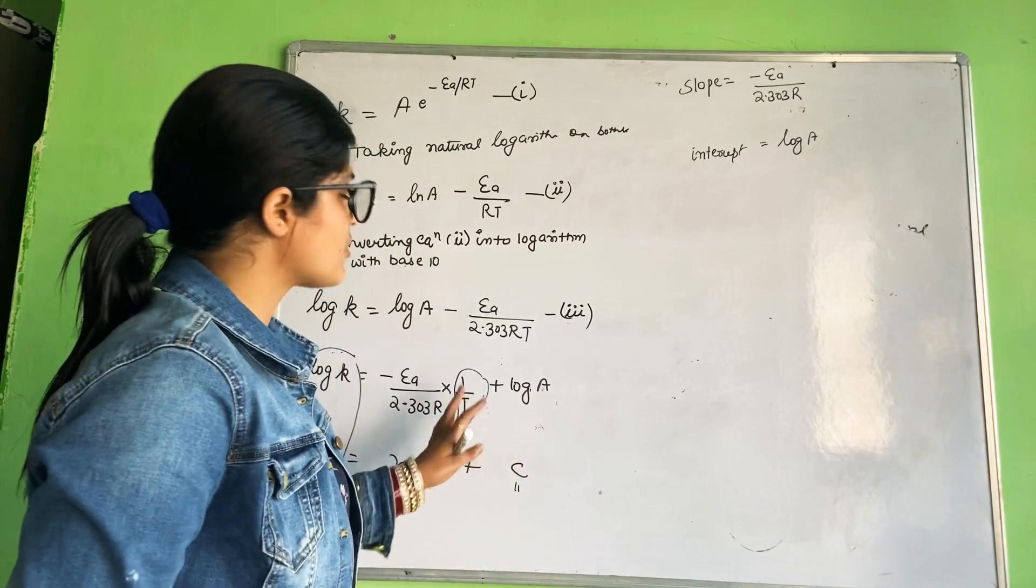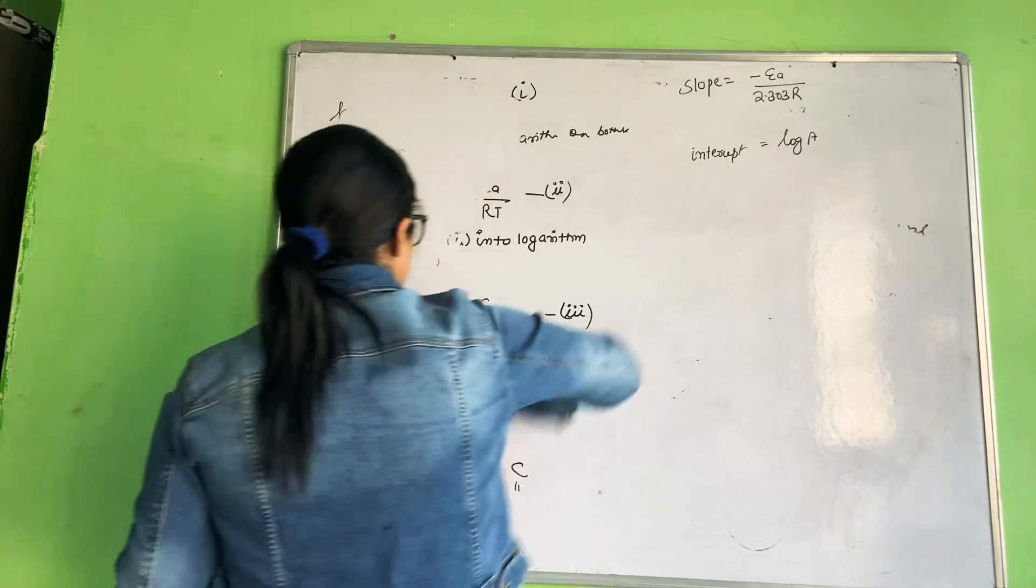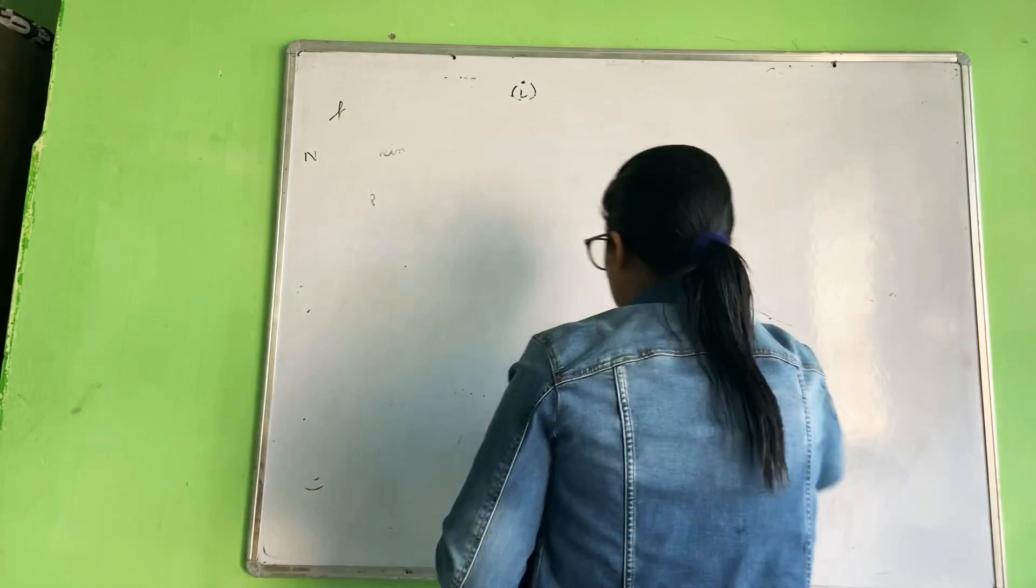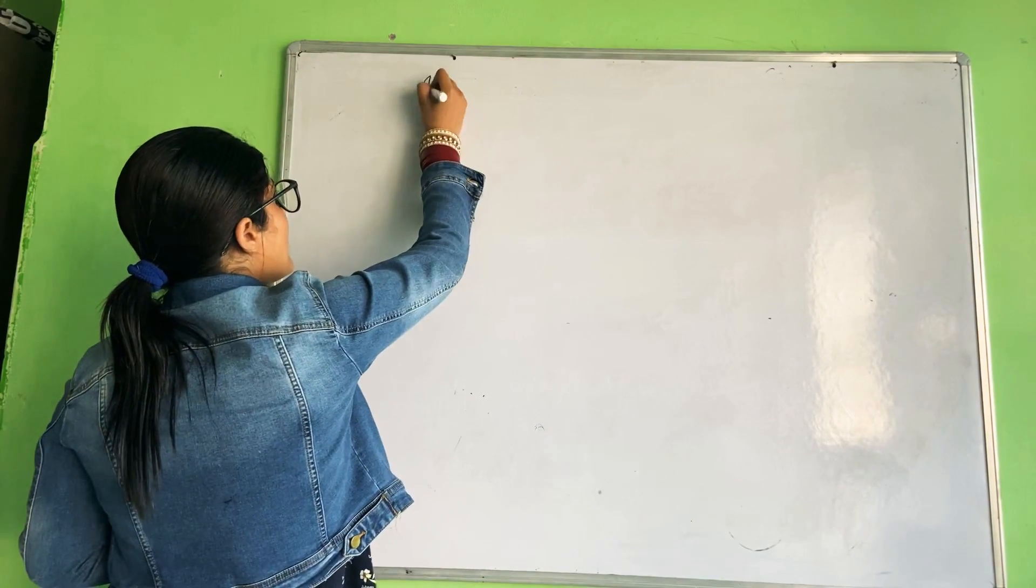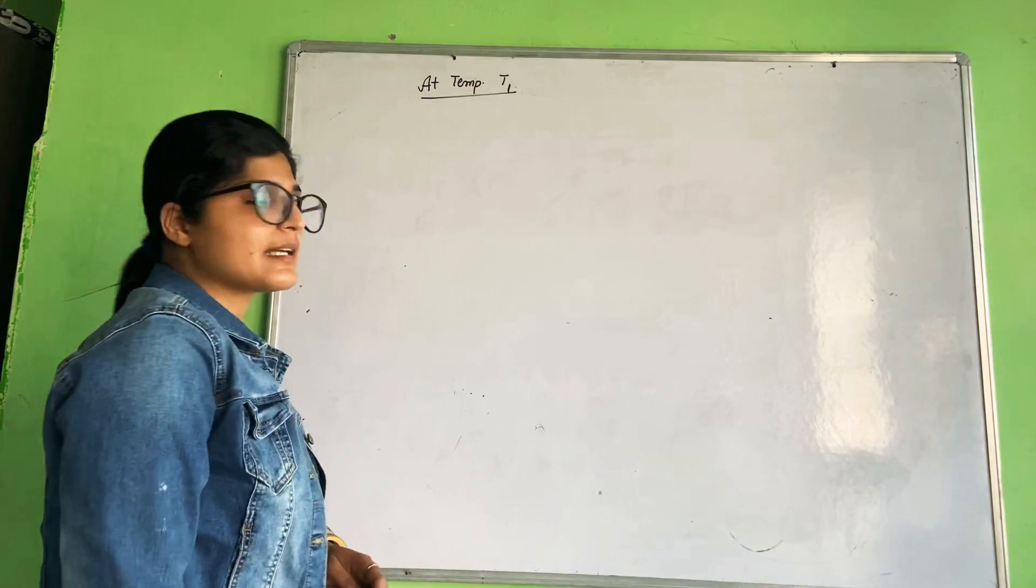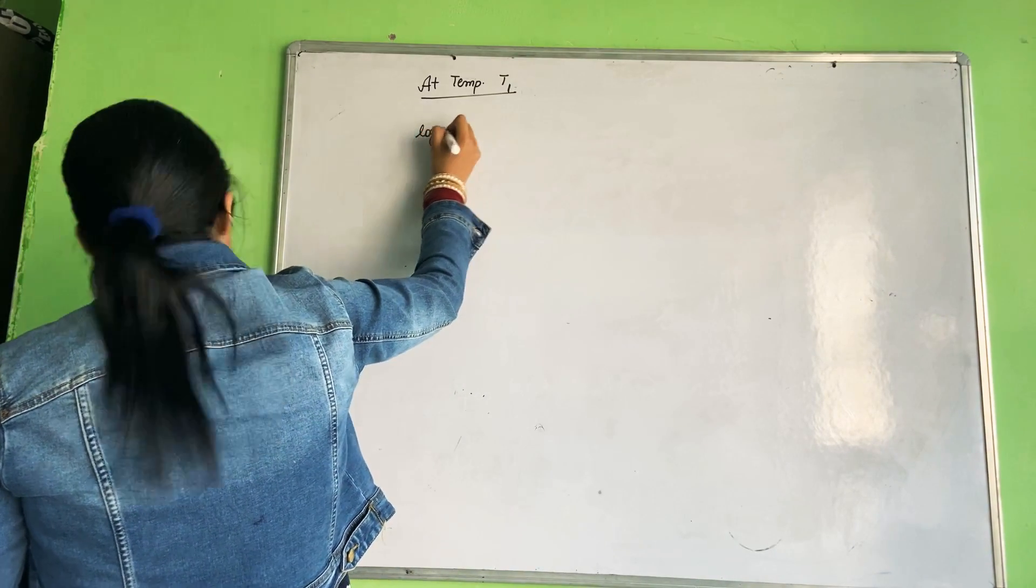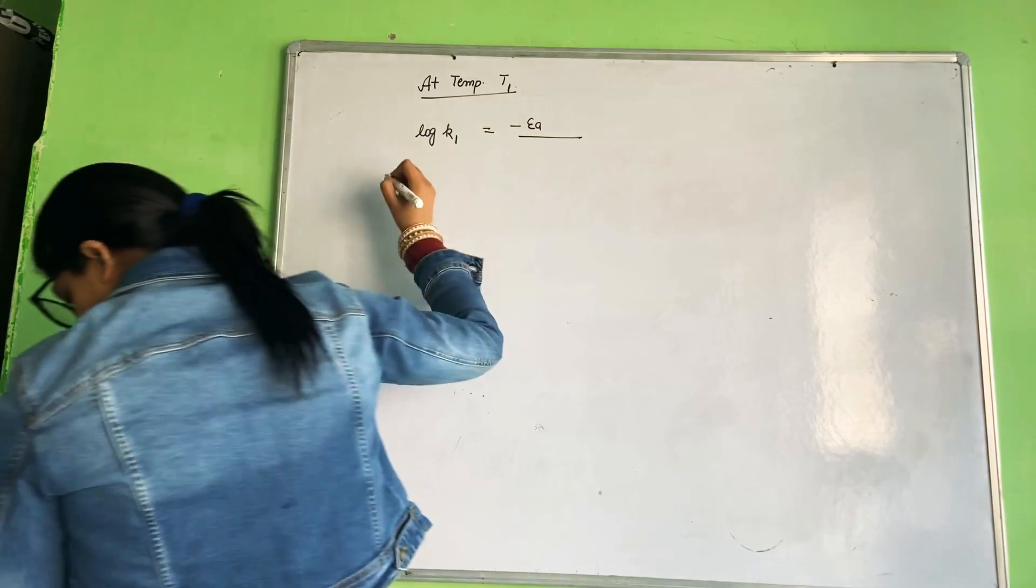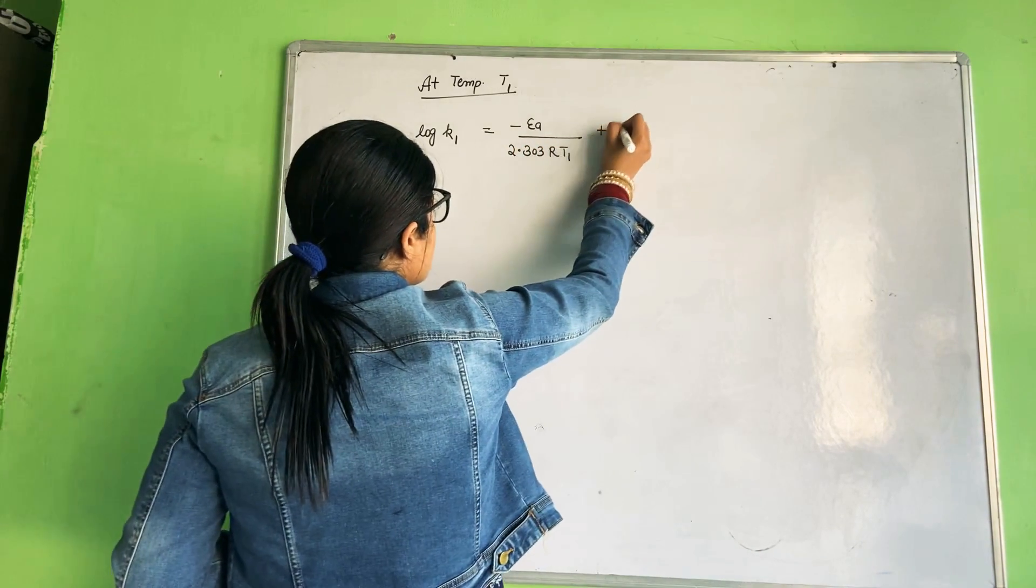If we work at two temperatures, the same reaction but at different temperatures, its rate of reaction will be different, and its rate constant. At temperature T1, what happens? Log k1 equals minus Ea upon 2.303R T1 plus log A.